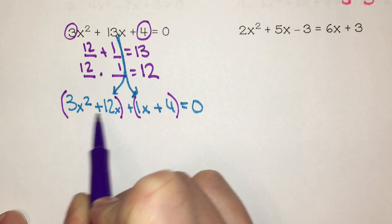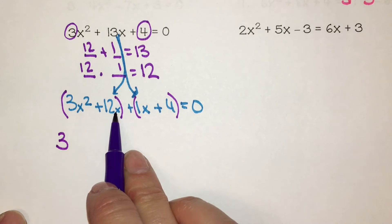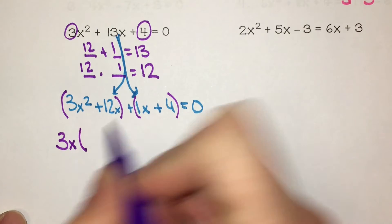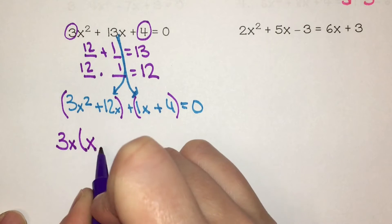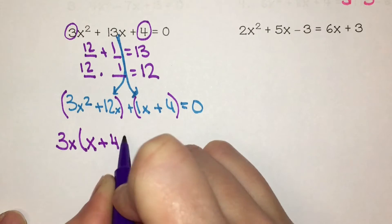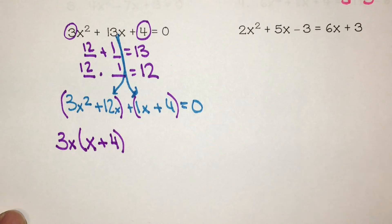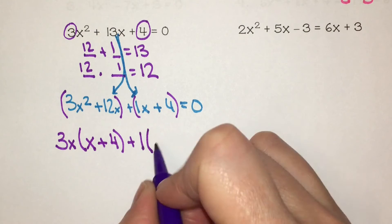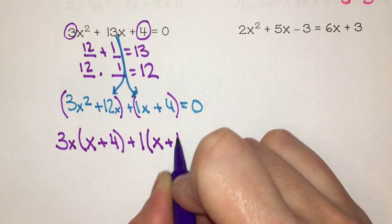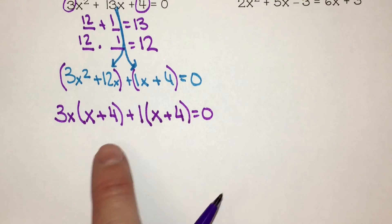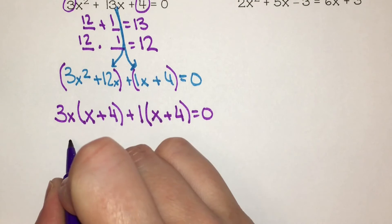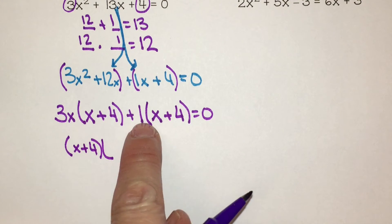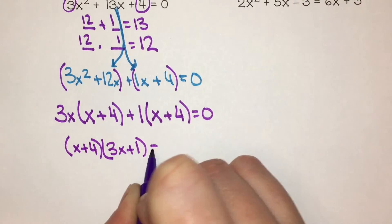I have a 3 and a 12 in the first group — they can both be divided by 3 — and I also have x squared and x, so I can factor out a 3x. 3x squared divided by 3x leaves me with x, and 12x divided by 3x is 4. In the second group, I don't really have a number to factor out, so I factor out 1: 1x divided by 1 is x, and 4 divided by 1 is still 4. Now I rewrite, pulling out the greatest common factor x plus 4. I'm left with 3x plus 1, and it's equal to 0 on the right.